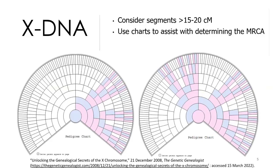X DNA has a unique inheritance pattern and it's important to keep that in mind while you're analyzing X DNA. Remember that in women, one copy of the X chromosome is passed on from their fathers and one copy of the X chromosome is passed on from their mothers. With women, the X inheritance pattern starts with a woman in the center and she receives an X from her father and an X from her mother.